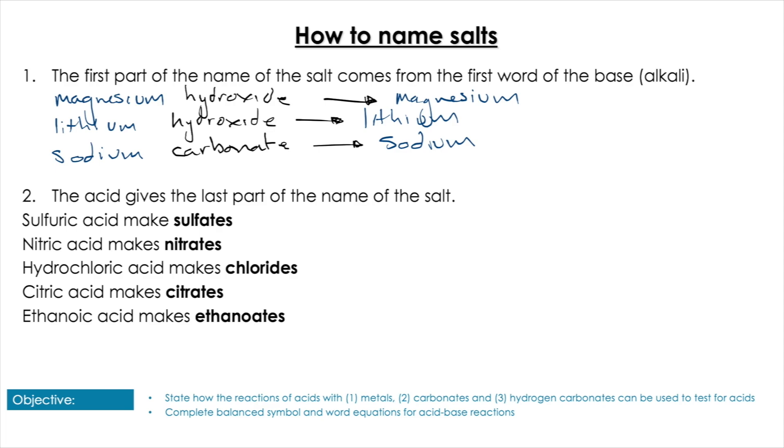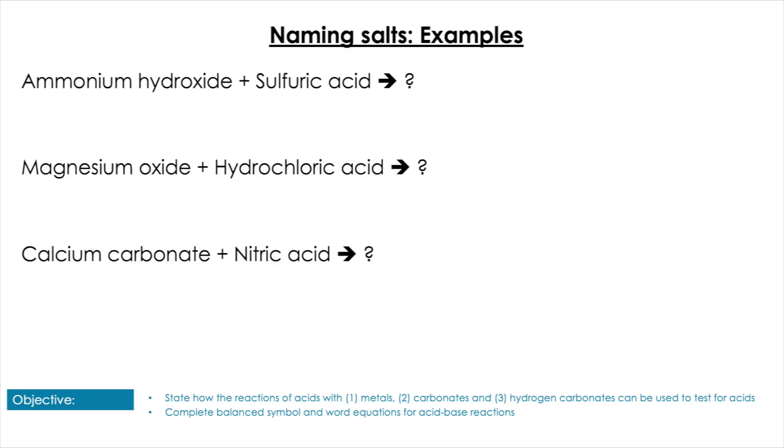To make this a bit clearer, let's have a look at some examples. So for this first one, I had ammonium hydroxide, so that was my base, so I'm going to have ammonium as my first word. And sulfuric acid gives sulfates, so it would of course produce ammonium sulfate. The second reaction, I have magnesium oxide, so magnesium oxide is my base, so it's going to be magnesium. Hydrochloric acid forms chlorides, so the salt produced with this reaction is going to be magnesium chloride.